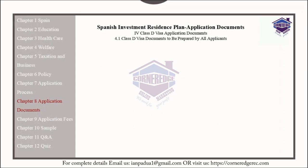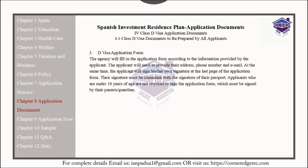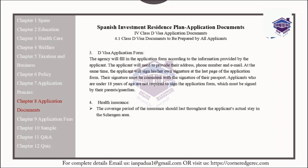For the D Visa Application Form, the agency will fill in the application form according to the information provided by the applicant. The applicant will need to provide their contact information, phone number, and email. The applicant will sign their own signature at the last page of the application form, and their signature must be consistent with the signature in their passport. Applicants who are under 18 years of age are not required to sign the application form, which must be signed by their parents or guardians.